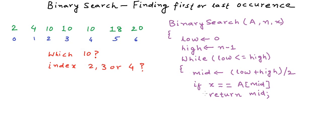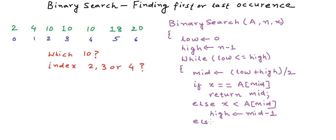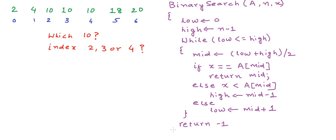We exit as soon as we find any occurrence of x — not necessarily the first or last occurrence, but any occurrence. If x is less than the mid element, we adjust high to mid-1, meaning x is now probable to lie before the mid element. The third and default condition is when x is greater than the mid element, in which case we adjust low to mid plus 1. If we exit the while loop without finding x, we return -1 to indicate x was not found.